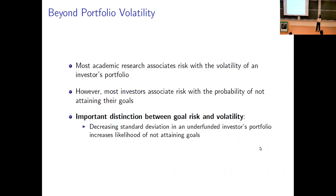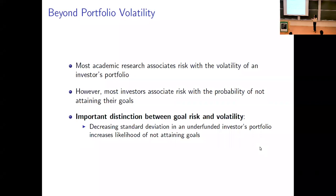Here's a simple example: imagine you have a portfolio that is currently underfunded, meaning you have not reached your desired goal amount. At this point, if you try to decrease the standard deviation or the volatility of the portfolio, it actually increases the likelihood of not attaining your goals. So there's really a distinction between attaining goals and portfolio volatility. This leads to the introduction of goal-based investing, which has gained popularity over the past few years.